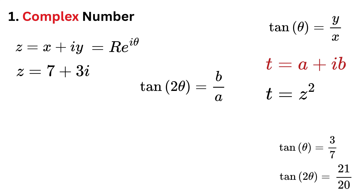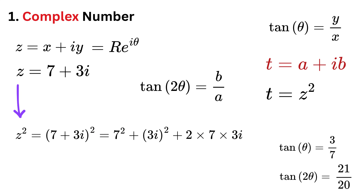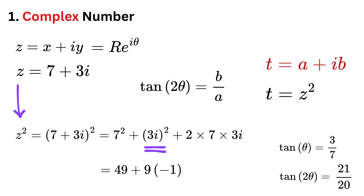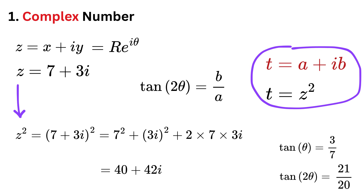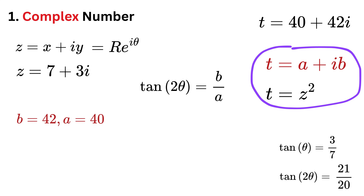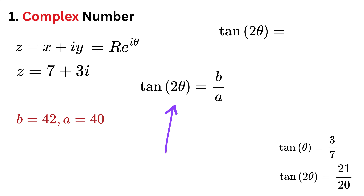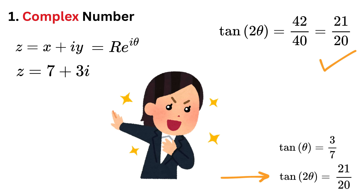Let us now square z. z squared equals (7 plus 3i) whole squared, which equals 7 squared plus 9i squared plus 2 times 7 times 3i. This is 49, then 9i squared equals 9 times minus 1 equals minus 9, and this gives 42i. So z squared equals 40 plus 42i. This means t equals z squared equals 40 plus 42i, so b equals 42 and a equals 40. Thus tan of 2 theta equals 42 over 40, or 21 over 20, which exactly matches the value we found using the standard formula. This was simply out of this world.